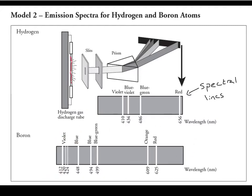Boron has completely different spectral lines than hydrogen, and once again this is something unique to boron. We can identify a sample of boron based upon these spectral lines. If we were to look at a sample of boron, we would see all of these lines produced in the exact same place with the same wavelengths.